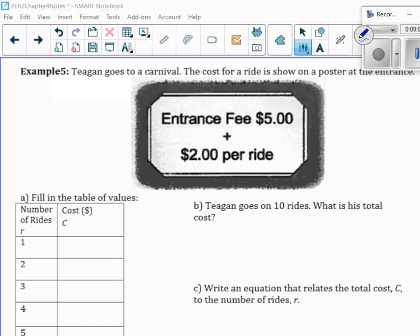So, now, we don't have pictures anymore. We just have some information here. Tegan goes to a carnival. The cost for the ride is shown on the poster at the entrance. The entrance fee is $5 plus $2 per ride. So, how much would it cost to go on one ride? Well, it would cost him not just $2. He has to get through the door with the $5.